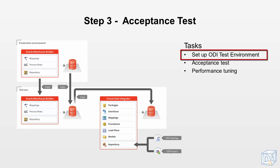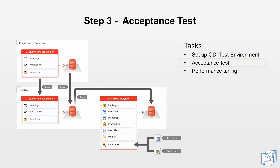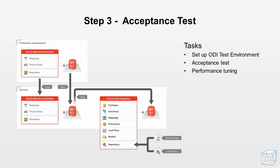We assume that OWB is already present and configured in your test environment. Next, the new ODI project will be tested to ensure that there are no regression issues. And finally, the ODI project's performances will be tuned with the database administrator. When this step ends successfully, we move on to the pre-production step.